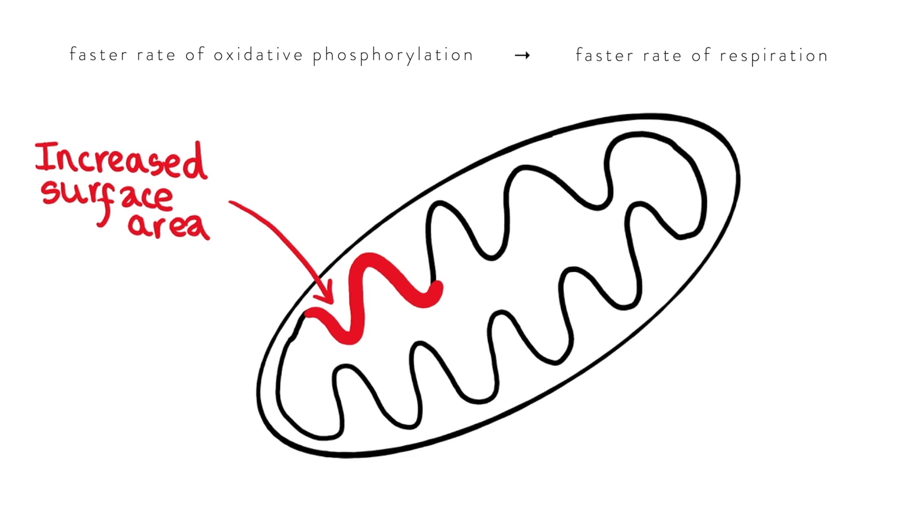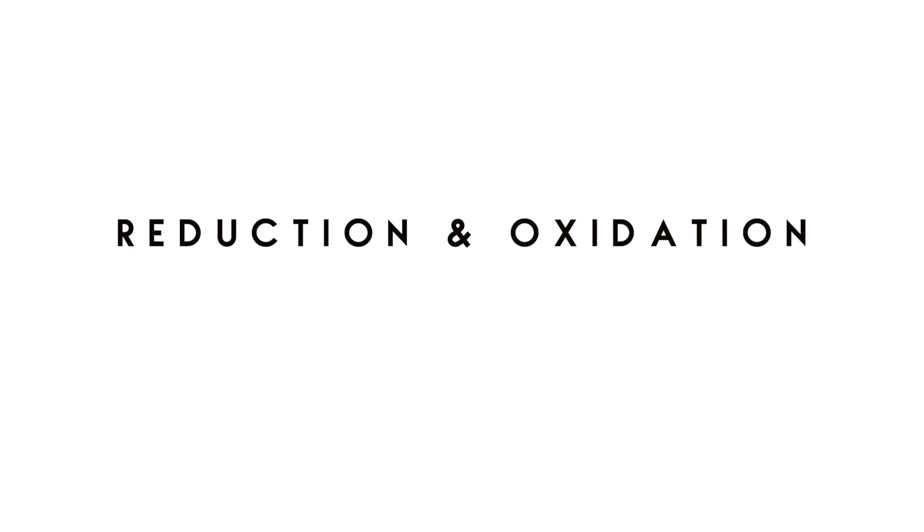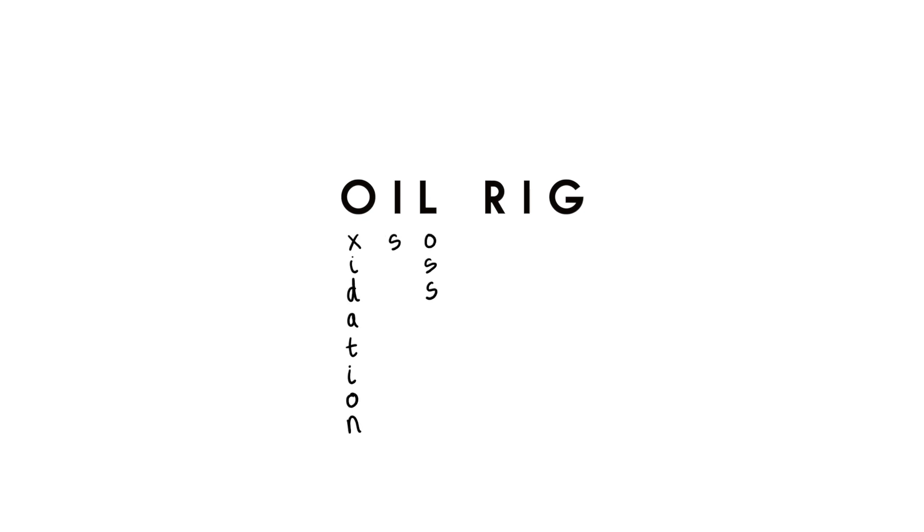The final question that we're just going to address in this video is really important to help you understand a lot of what's going on in respiration and this question is what is reduction and oxidation or otherwise known as redox. So the first thing you need to remember is OILRIG. O-I-L-R-I-G. This stands for oxidation is loss and reduction is gain and more specifically it means that oxidation is loss of electrons or hydrogen whereas reduction is gain of electrons or hydrogen.